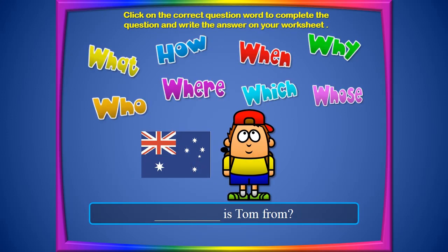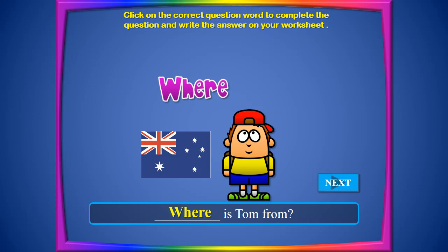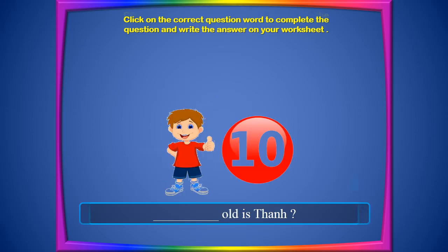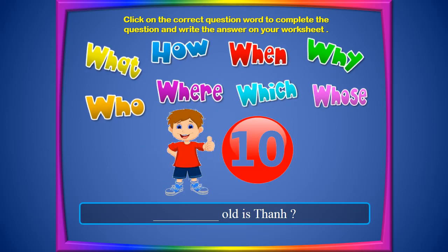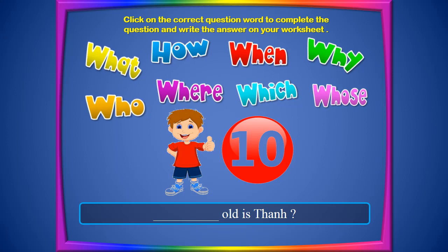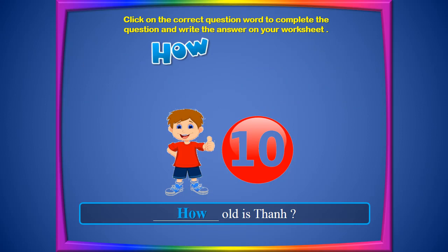You ask 'Where is Tom from?' — he's from Australia. For number 10, you need to put 'how' into the blank. The question is: How old is Tan?